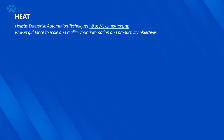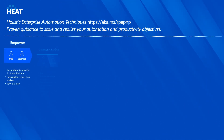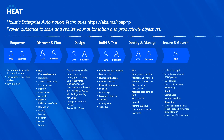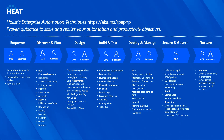This forms the core of the Automation Maturity Model — what we call HEAT, which stands for Holistic Enterprise Automation Techniques. HEAT is based on seven pillars: Empower, Discover and Plan, Design, Build and Test, Deploy and Manage, Secure and Govern, and Nurture. For an automation program to be successful, it's important that you lay focus on all of these seven pillars. This forms an important aspect of our RPA Maturity Model.